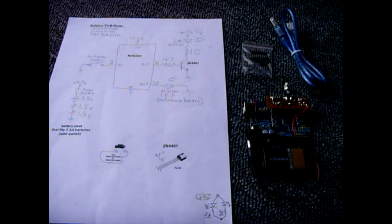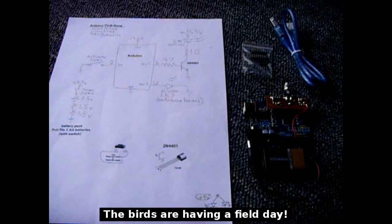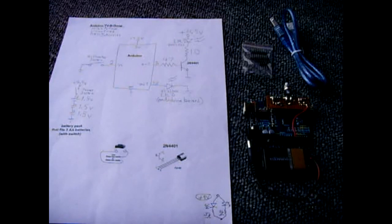The other components you will require for this project are as follows: one 2N4401 NPN transistor, two infrared LEDs which you can salvage from an old or broken infrared remote control, a nine volt battery snap, one normally open momentary push-button switch, a 56 ohm quarter watt resistor, a 10 ohm half watt resistor, one on-off switch, and a small prototype PCB.